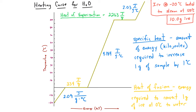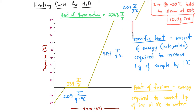Once the water reaches 100°C, the energy going into the water transforms it from liquid into the vapor phase, which we calculate using the heat of vaporization. Once all the water has been converted into vapor, we then use the specific heat of steam to increase the temperature of the steam up to 120°C.